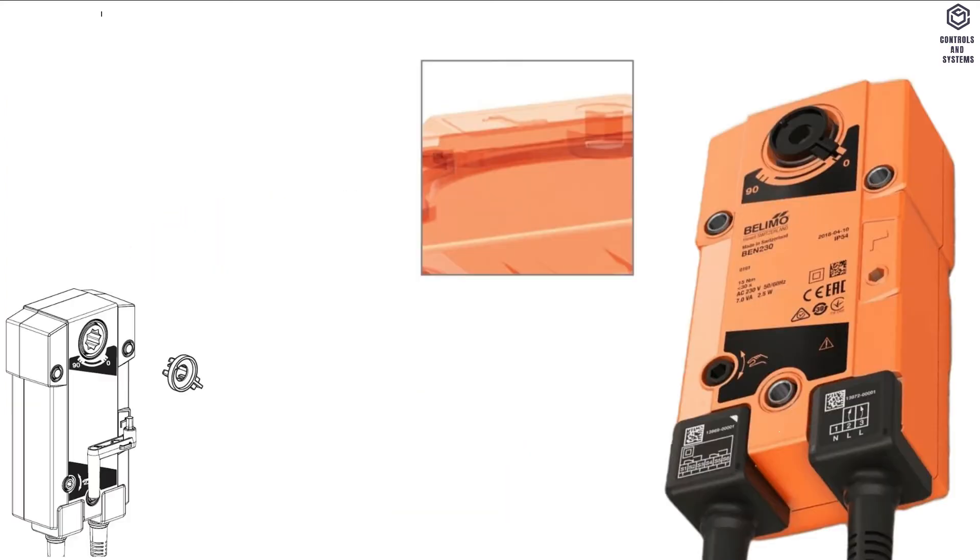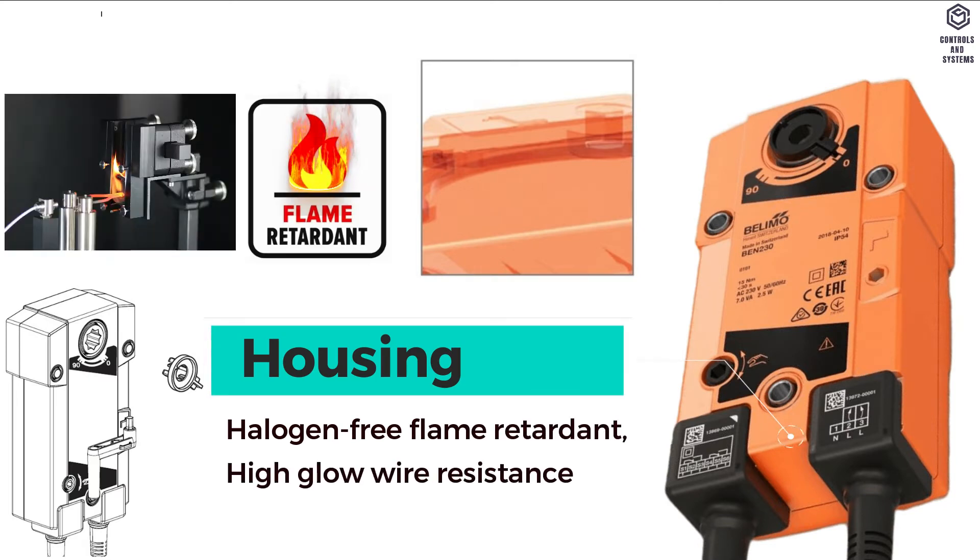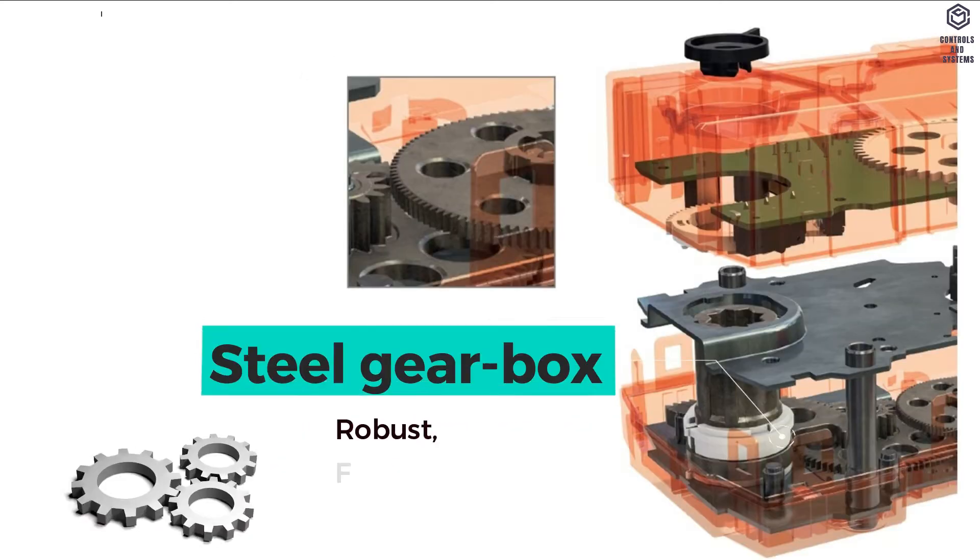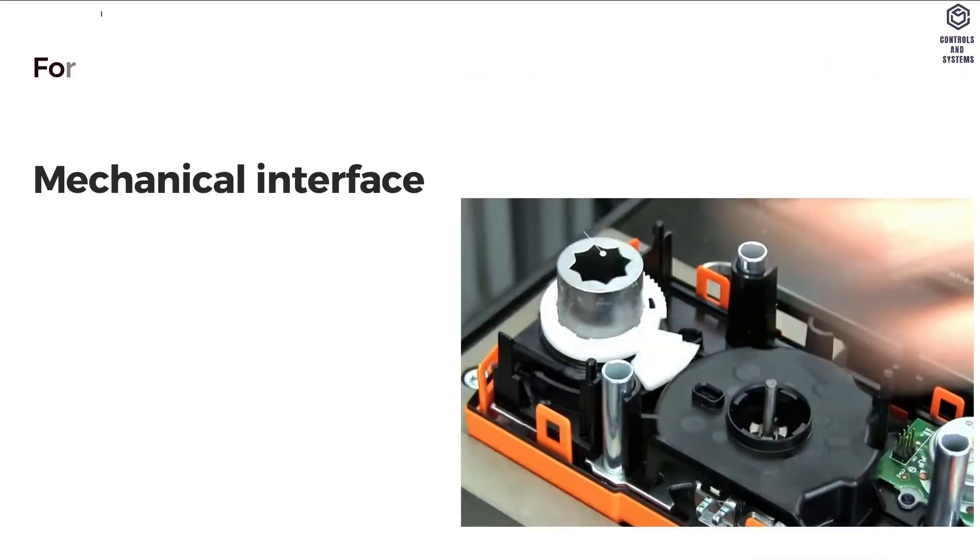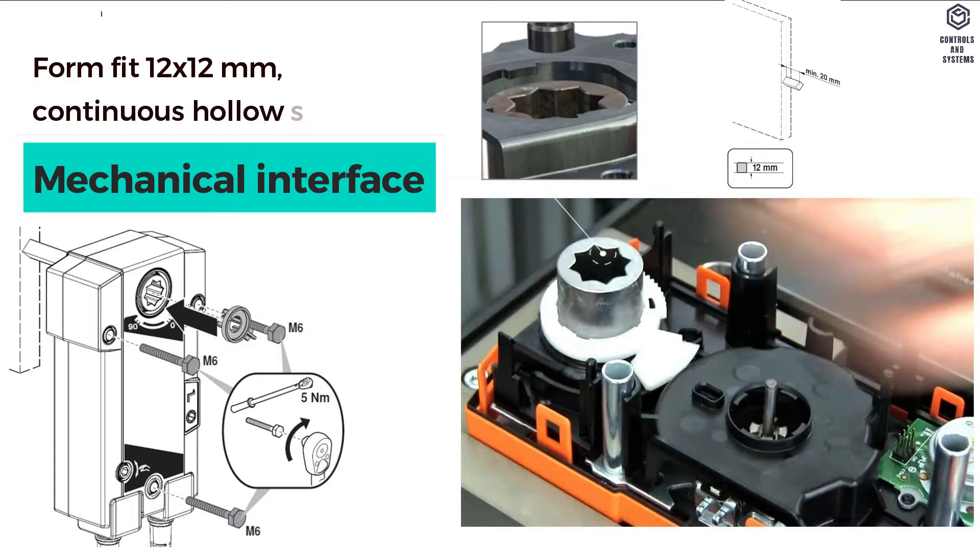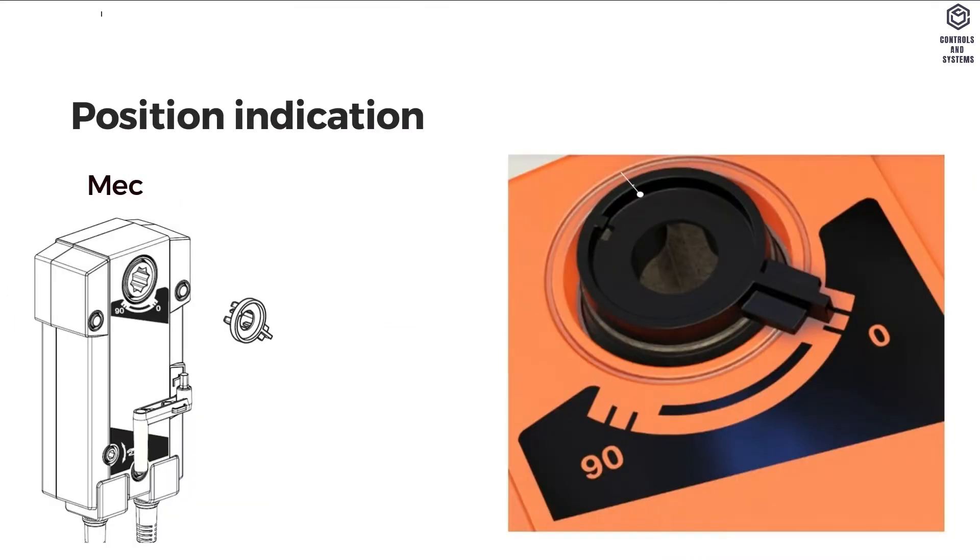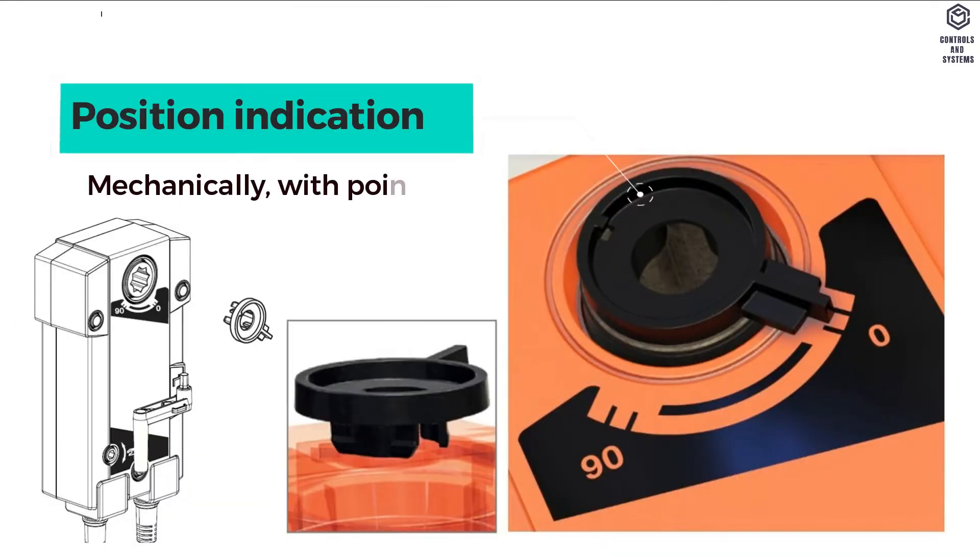Material data: housing is halogen-free flame retardant, high glow wire resistance. Actuator steel gears are robust and fire resistant. Mechanical interface is form fit 12 into 12 millimeter, continuous hollow shaft. Manual override is possible with hand crank. Position indication is mechanical with pointer.